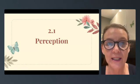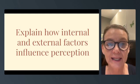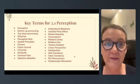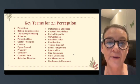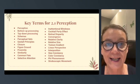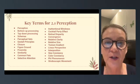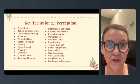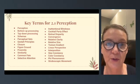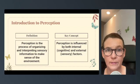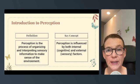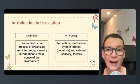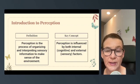2.1 is Perception. The CED question is: explain how internal and external factors influence perception. We're going to have the key terms on a separate video with definitions and examples. This video is just going to be looking at the CED questions and the essential knowledge you need to know for this particular part of the test.